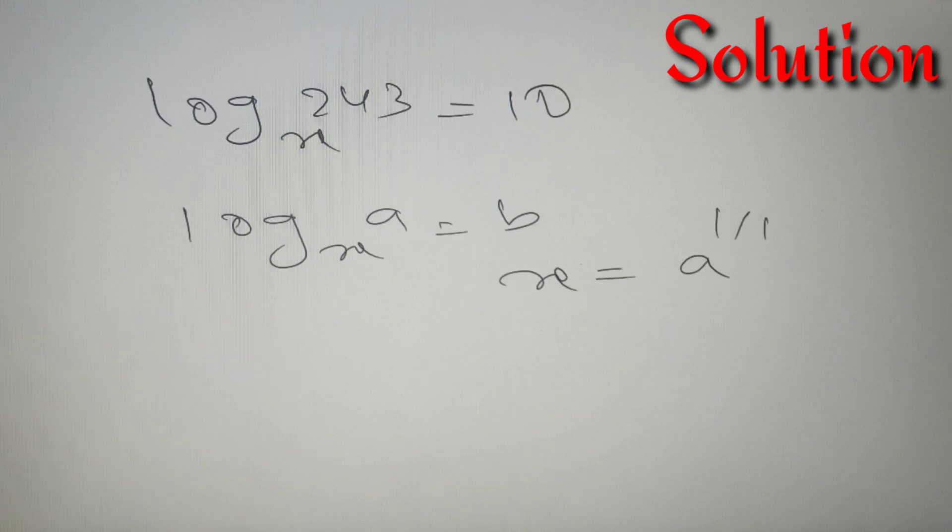According to our given question, log 243 to the base x is equal to 10. Now there is a very important formula related to log which says that if log a to the base x is equal to b, then we can say that x is equal to a raised to the power 1 by b.